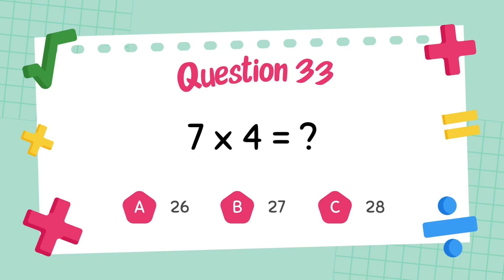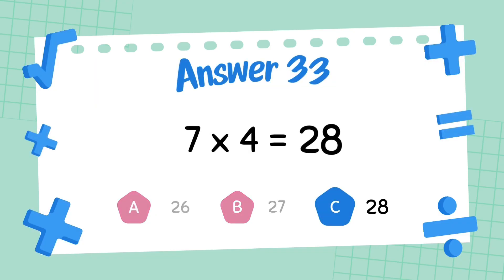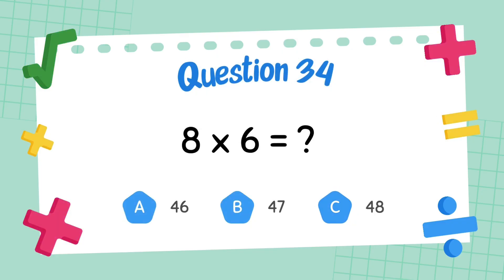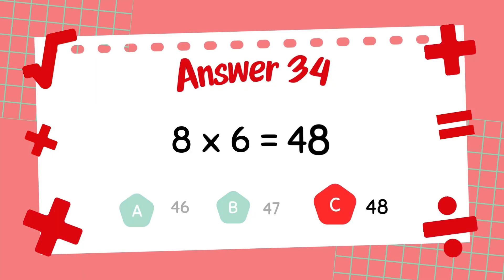What is 7 multiply 4? The answer is 28. What is 8 multiply 6? The answer is 48.